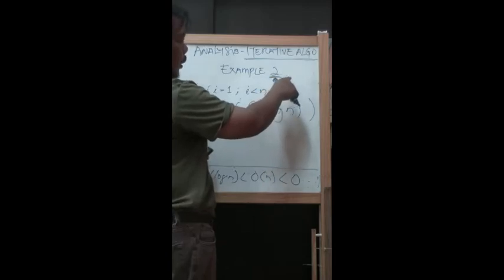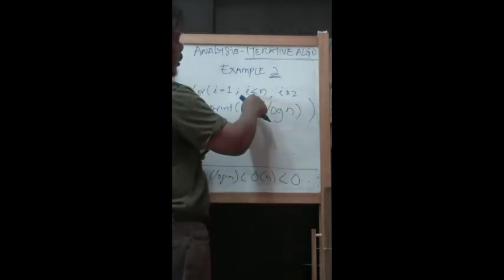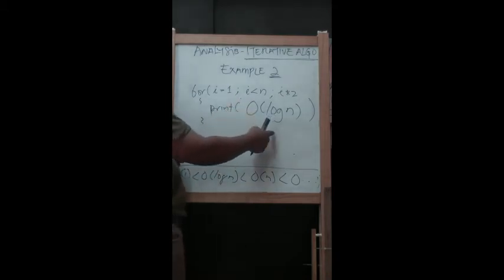Let's say we set n equal to eight, so it becomes four times two equals eight, then this loop will stop. Before that, we have to identify what is the basic operation for this.